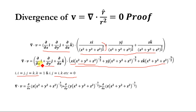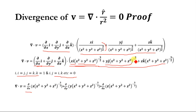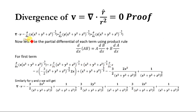The divergence becomes: ∂/∂x [x·(x²+y²+z²)^(−3/2)] + ∂/∂y [y·(x²+y²+z²)^(−3/2)] + ∂/∂z [z·(x²+y²+z²)^(−3/2)]. We will apply the product rule to each of these three terms.